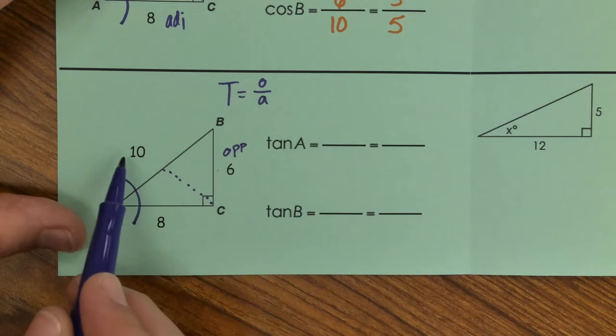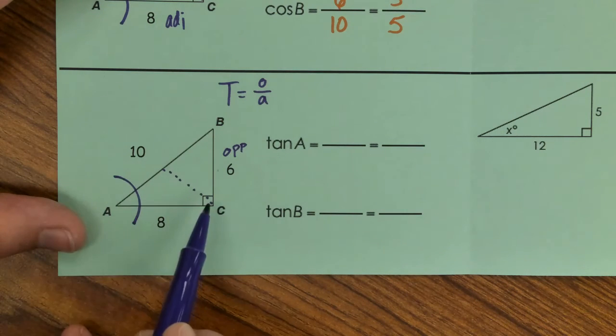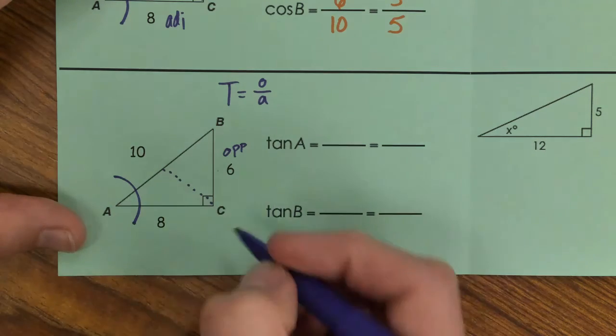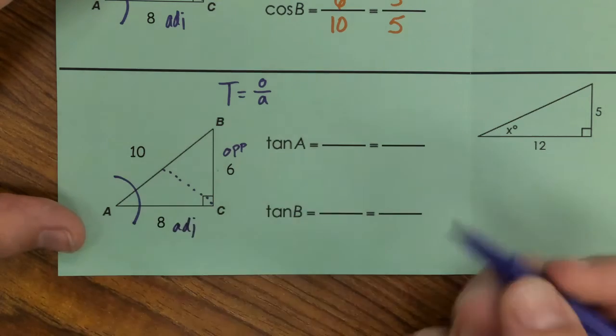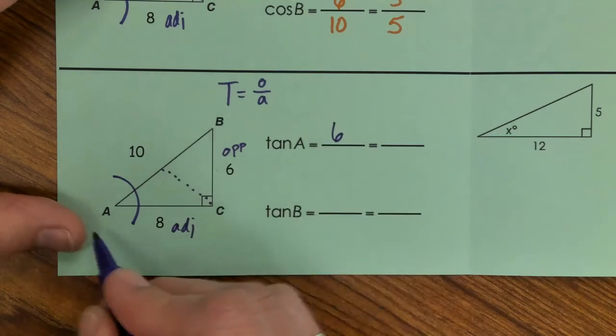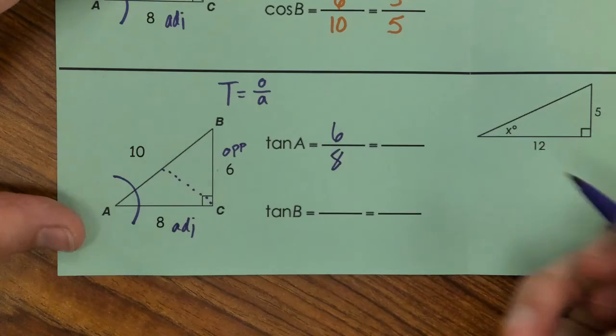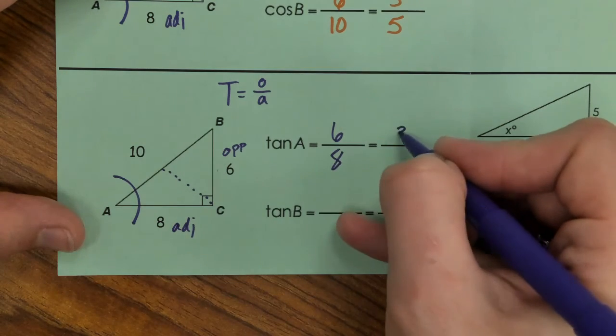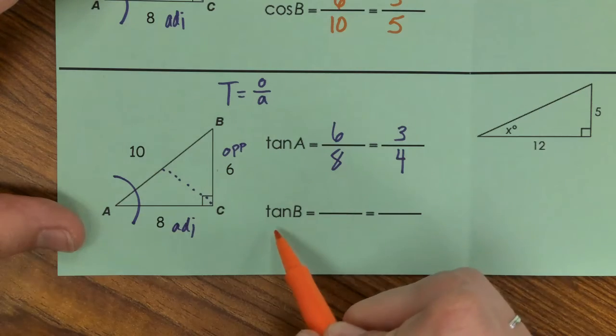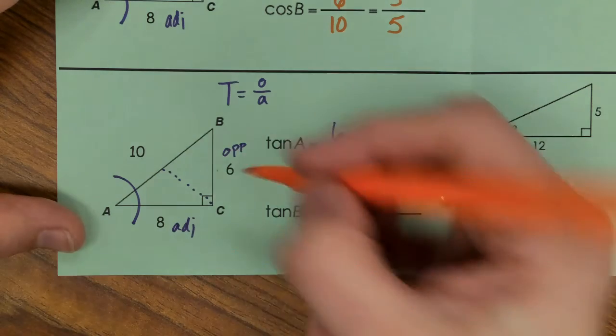So we have that dashed line so we don't say that the 10 is our adjacent, because it's across, it's our hypotenuse, which means the 8 will be our adjacent. So we put our opposite on top, 6, and our adjacent, 8, on bottom. We simplify this to 3 fourths.